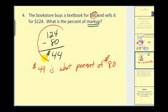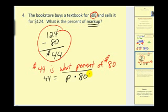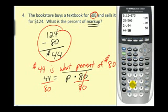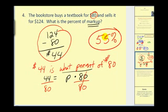We translate that into an equation: forty-four equals p times eighty. We divide both sides by eighty to solve for p. Forty-four divided by eighty, then converted to a percentage by multiplying by one hundred, gives us fifty-five percent, which is our markup.